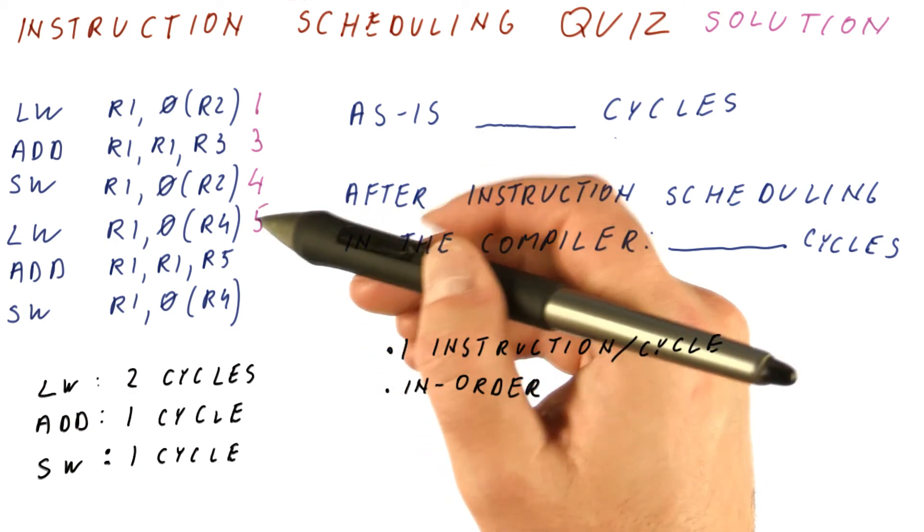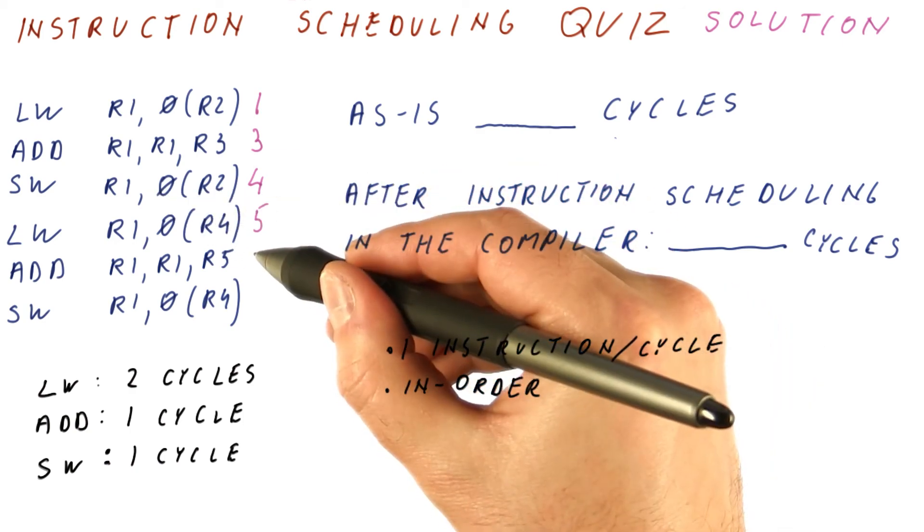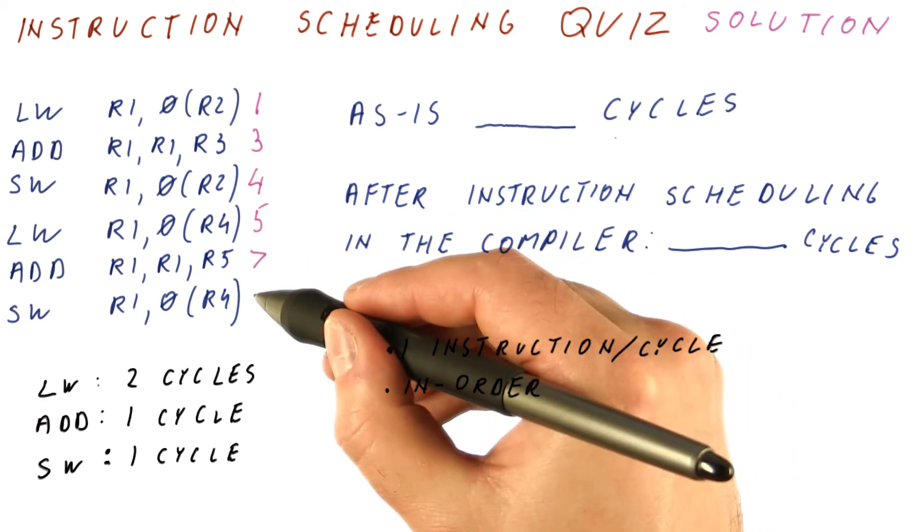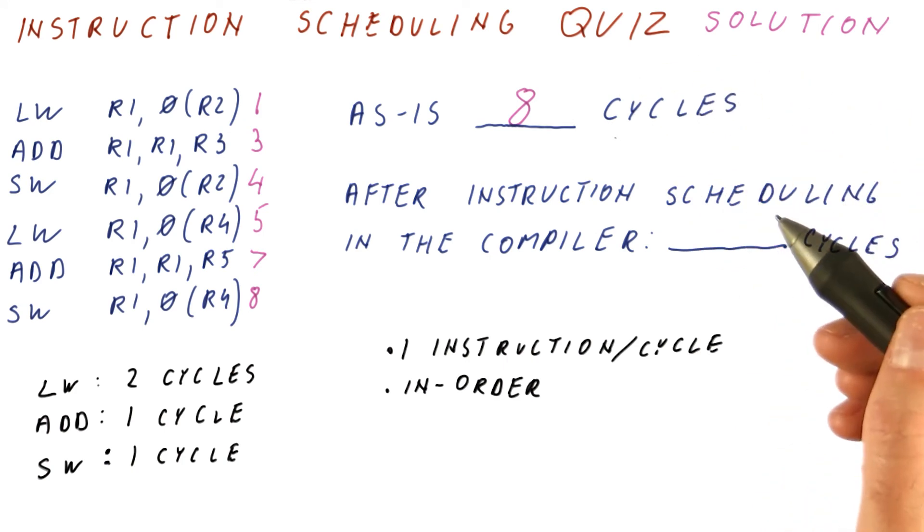Then we can do the load. It doesn't depend on anything, so we can do the load in cycle five. The add, however, can now happen only in cycle seven. And finally, the store happens in cycle eight. So as is, this executes in eight cycles.